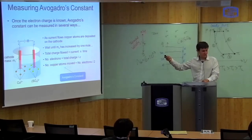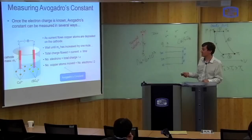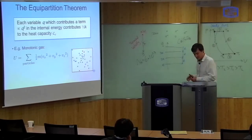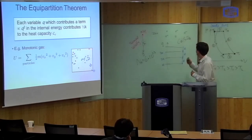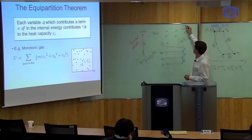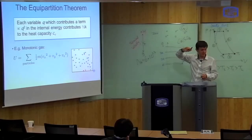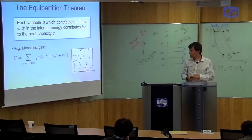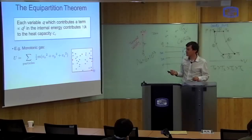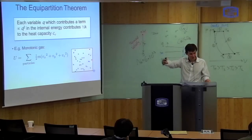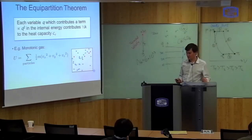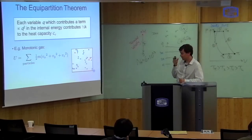So that's the end of the first part of the presentation — this is how Avogadro's constant is measured. Now let me explain the second part: the equipartition theorem, which is about telling you what the value of the heat capacity should be. The theory of statistical mechanics, which I'm going to talk about in the second half of this course, has a prediction about the heat capacity. The classical theory can be stated as follows.